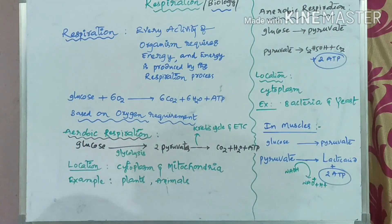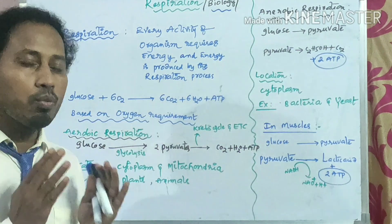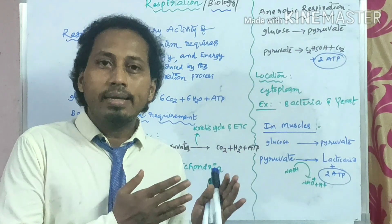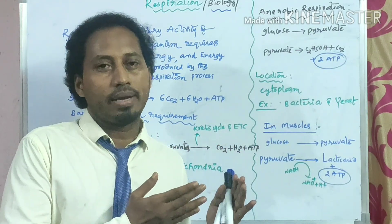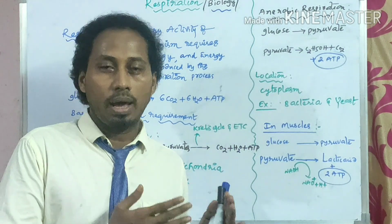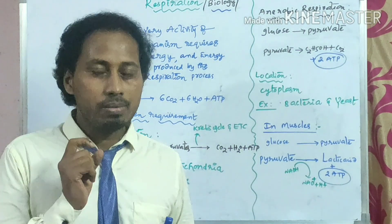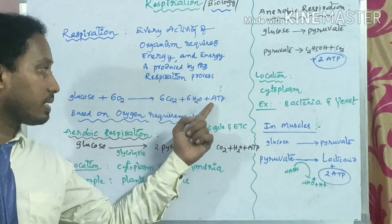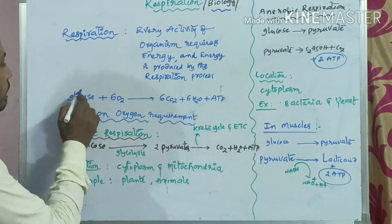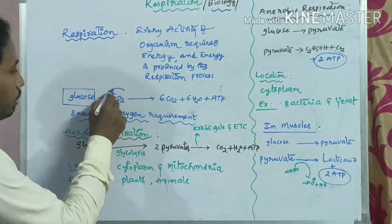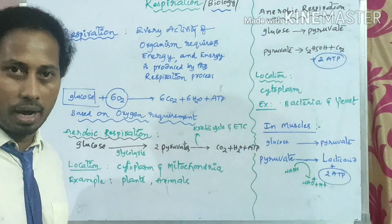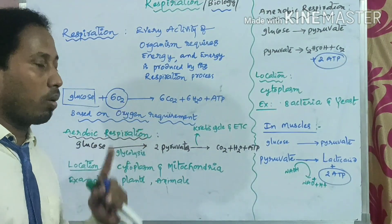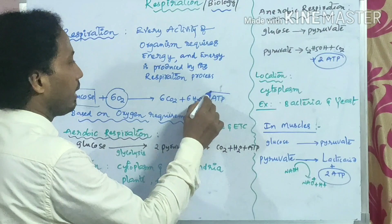So what exactly is respiration? It is one type of life process. In digestion, all the complex molecules are broken down and produce simpler molecules. Those simpler molecules undergo oxidation and produce energy. The energy is in the form of ATP. The simpler molecule utilized here is glucose. Oxygen is utilized, meaning the food is oxidized, and energy in the form of ATP is produced.